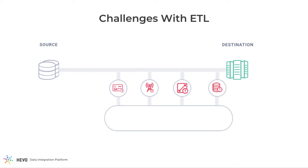Ensuring these problems are caught and handled in a robust manner is critical to ensure the data that you bring in for analysis is the latest, complete, and error-free. In order to address this problem in HEVO, we have a concept called the Replay Queue.